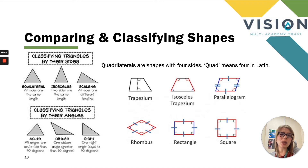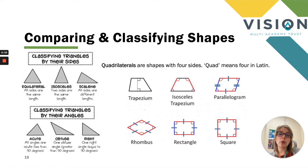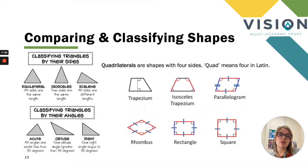We can also classify triangles by their angles. An acute triangle has all angles less than 90 degrees. An obtuse triangle has at least one obtuse angle greater than 90 degrees. And a right-angle triangle has one right angle equal to 90 degrees. So there are two separate ways to compare, classify and group triangles.